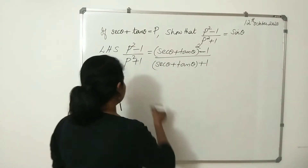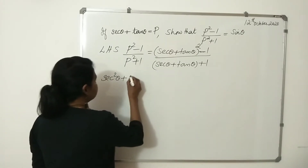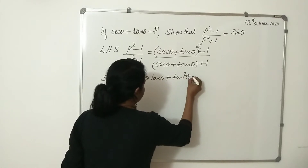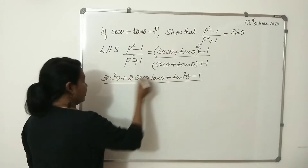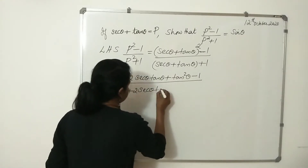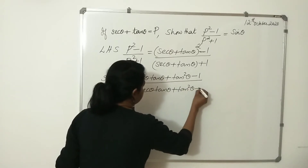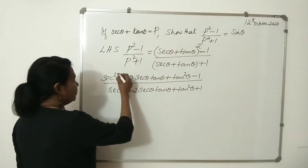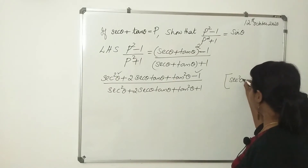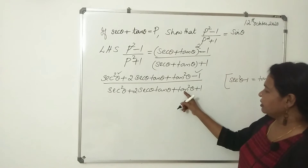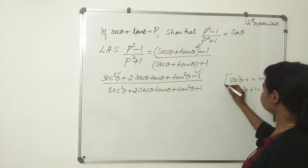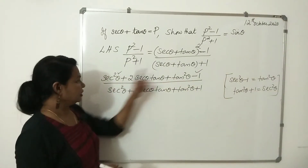It is in the form (a + b)², so we get sec²θ + 2secθ·tanθ + tan²θ minus 1, divided by sec²θ + 2secθ·tanθ + tan²θ plus 1. We know sec²θ - 1 = tan²θ, and tan²θ + 1 = sec²θ.